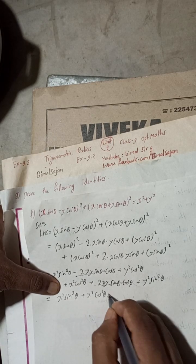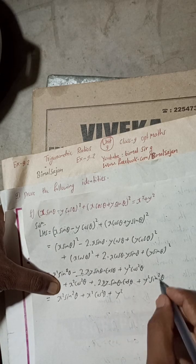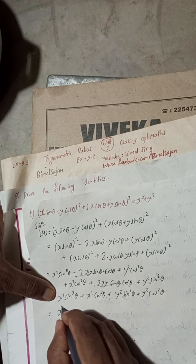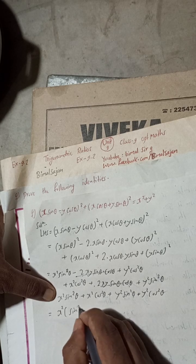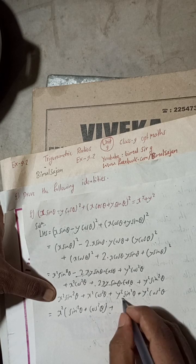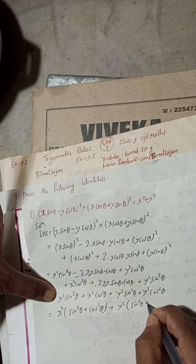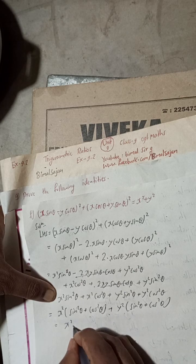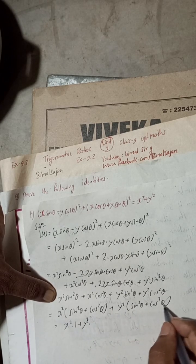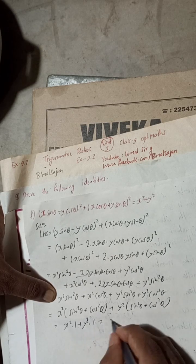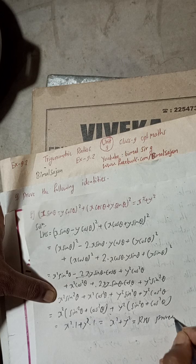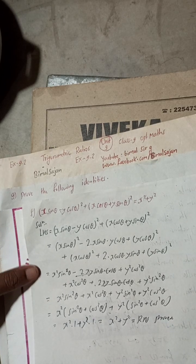We can write: x² sin²θ + x² cos²θ + y² sin²θ + y² cos²θ. Now x² is common, giving x²(sin²θ + cos²θ), and y² is common, giving y²(sin²θ + cos²θ). Since sin²θ + cos²θ = 1, this becomes x²·1 + y²·1 = x² + y², which equals the RHS. Proved. This is the complete solution of 9F.